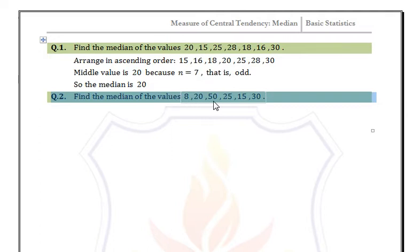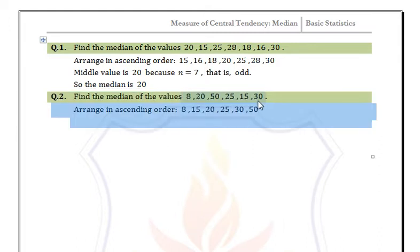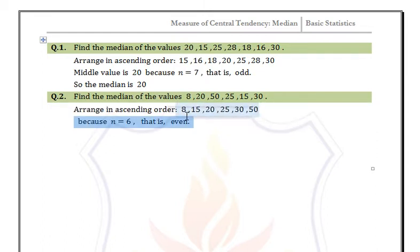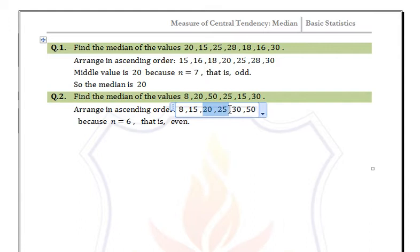Next example: Find the median of the values 8, 20, 50, 25, 15, 30. Again we have only observations, so arrange the data in ascending order. The number of observations is 6, which is an even number, so we have two middle terms.